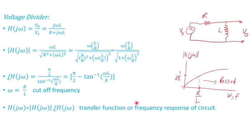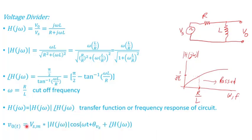Starting with H, the transfer function, we can express it in polar form as magnitude and angle, and from that we can go back to the instantaneous signal.